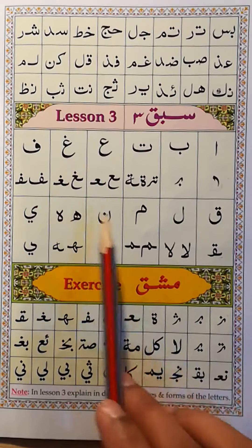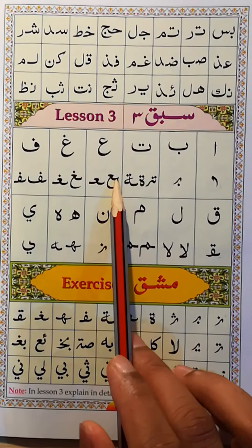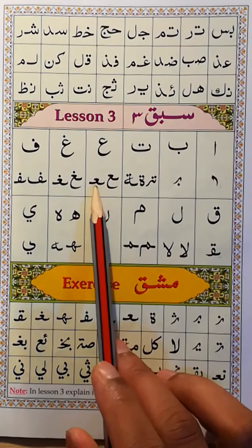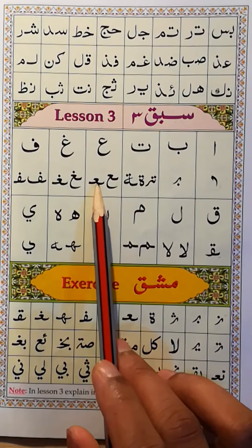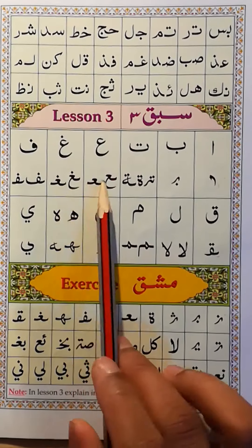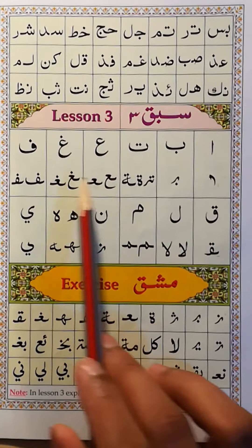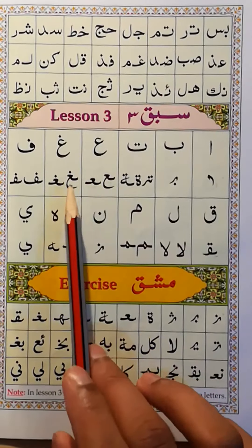For the ayin, this is the ayin at the end of the word, and this is the ayin at the middle of the word. Ayin and ghayn look the same — the difference is dots. Ayin has no dots, ghayn has dots.